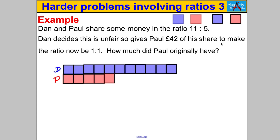Dan decides the split is unfair, so he gives Paul 42 pounds of his share to make the ratio now 1 to 1. How much did Paul have originally? We have a before and after situation, just like before. In the after situation, you don't necessarily always know how many boxes or parts you have, so let's steer clear of individual boxes.